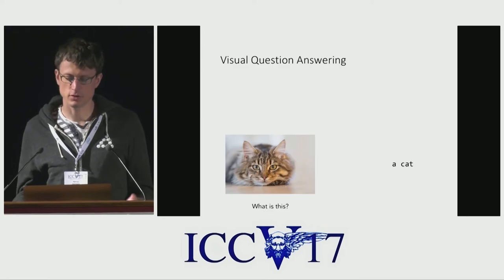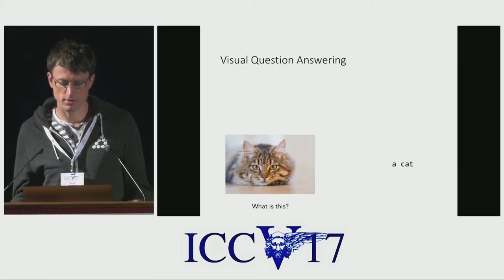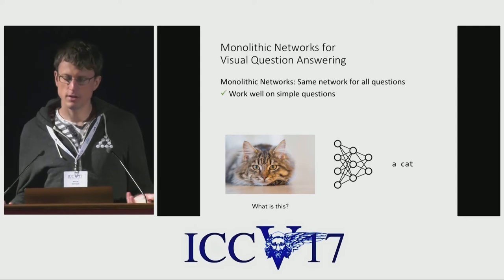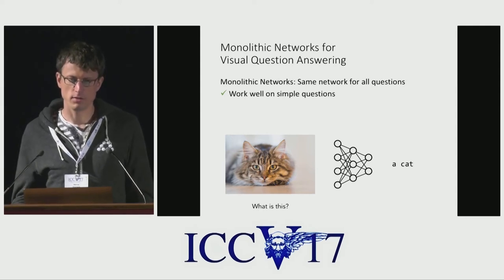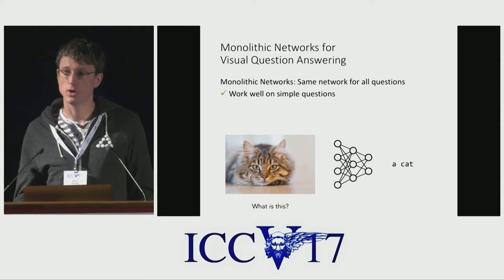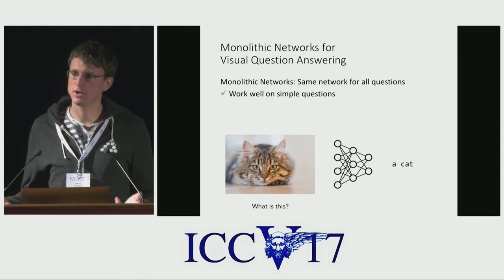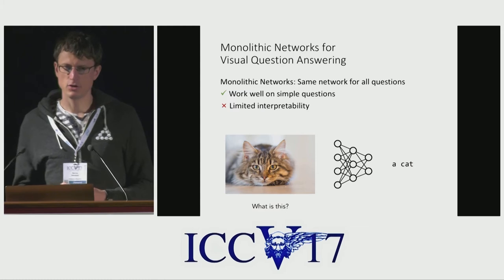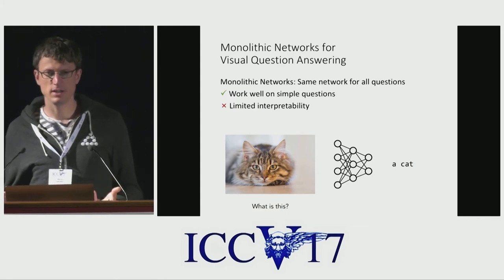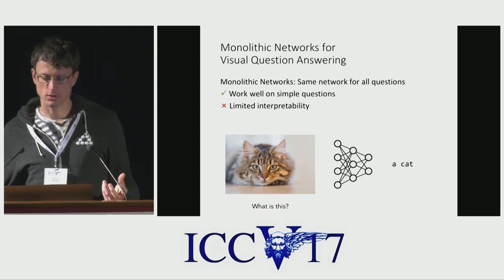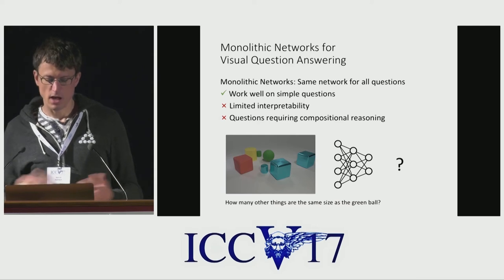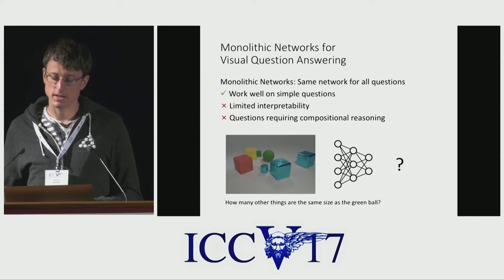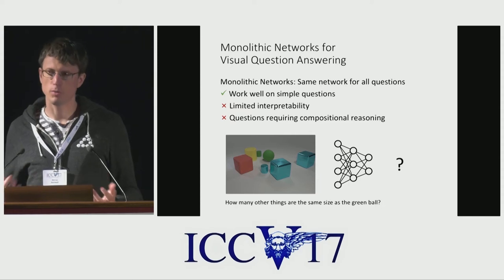We are interested in the task of visual question answering — answering questions about images like this one. Most state-of-the-art approaches use monolithic networks, which means they use the same network for all questions. It works well on simple questions, but those networks typically have limited interpretability, and for more complicated questions such as 'how many other things are the same size as the green ball,' we might want more compositional reasoning.